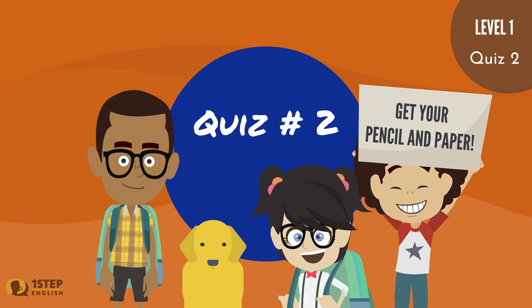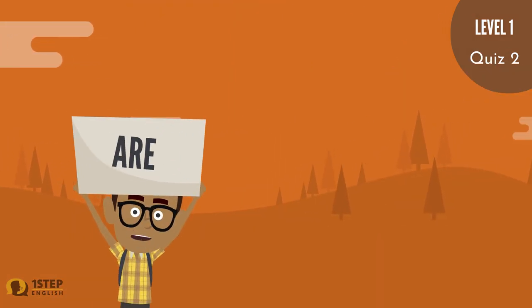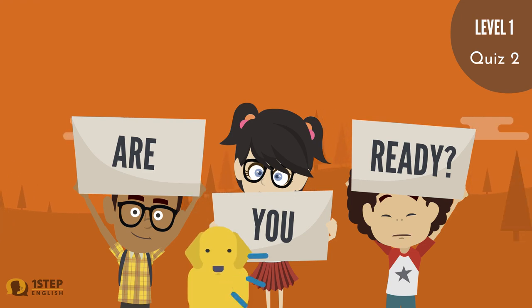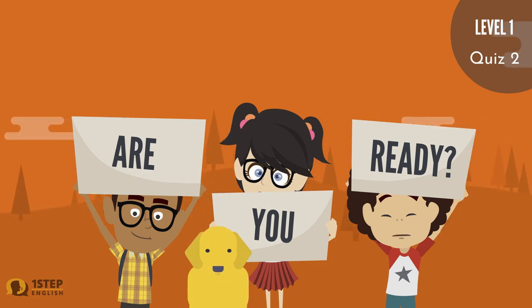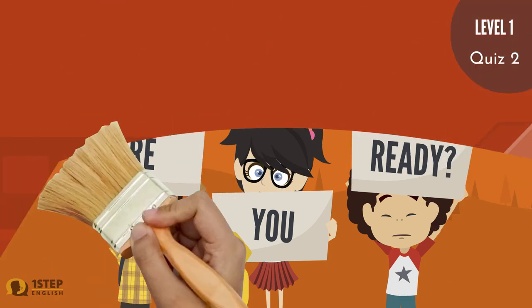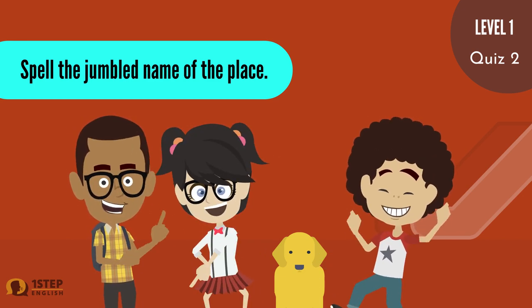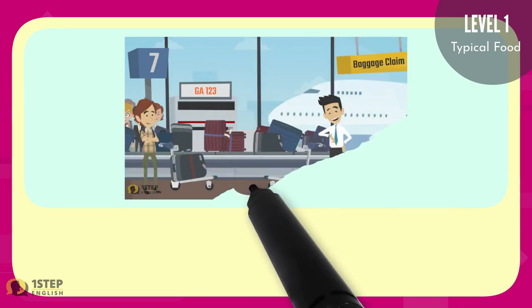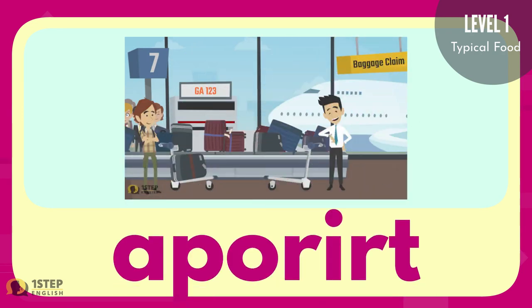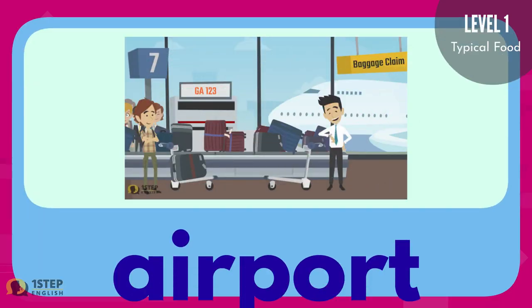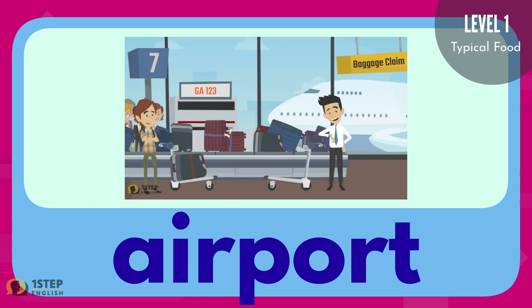Quiz number two — ready your pencil and paper. Are you ready? Spell the jumbled name of the place. A-P-O-R-I-R-T. The correct answer is A-I-R-P-O-R-T — Airport.